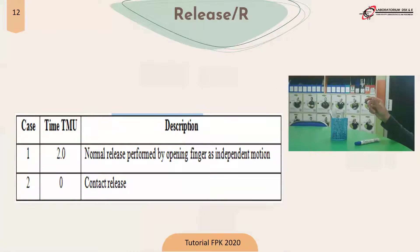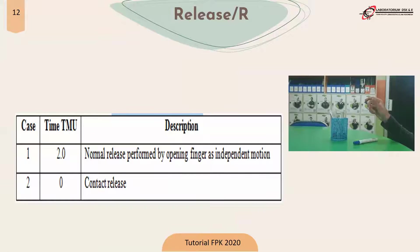The next element is release. To determine the TMU value there are two cases: Case 1 is removing normally where there is a vertical distance with a grasp; Case 2 is followed by contact or touching, where there is a horizontal distance and touch.